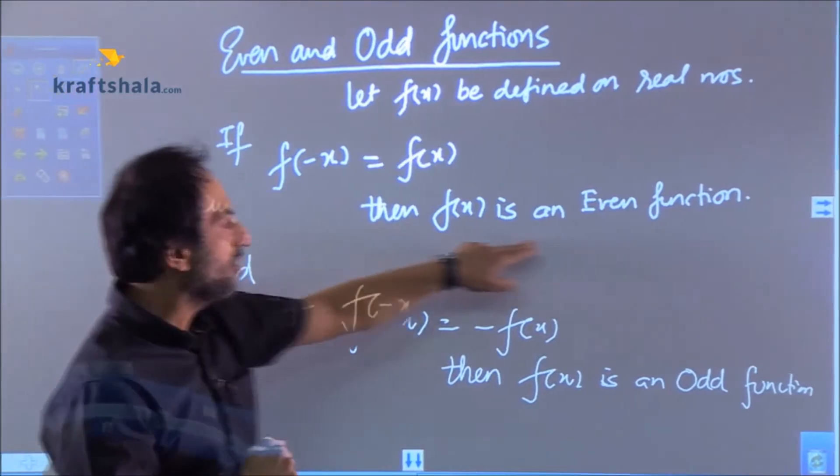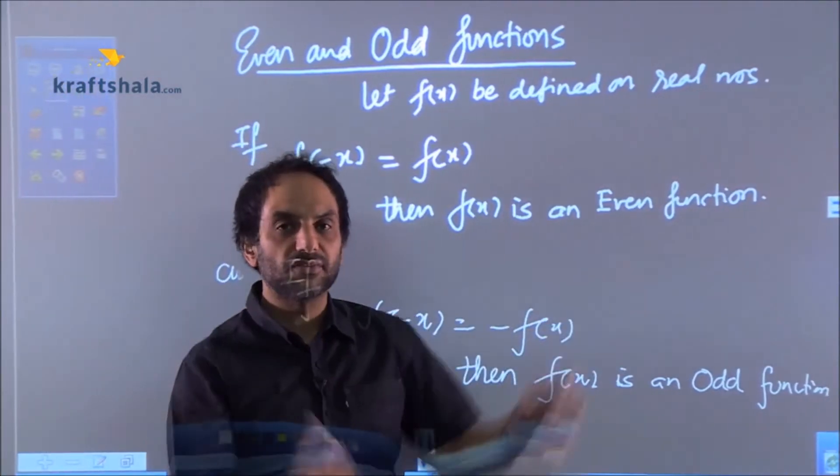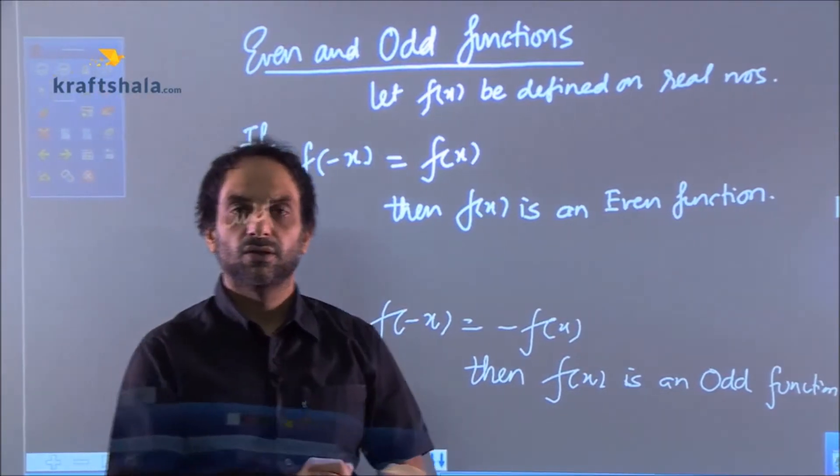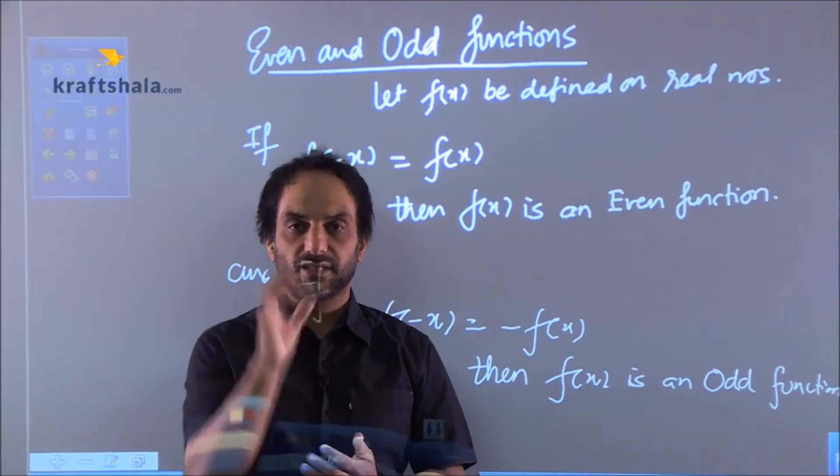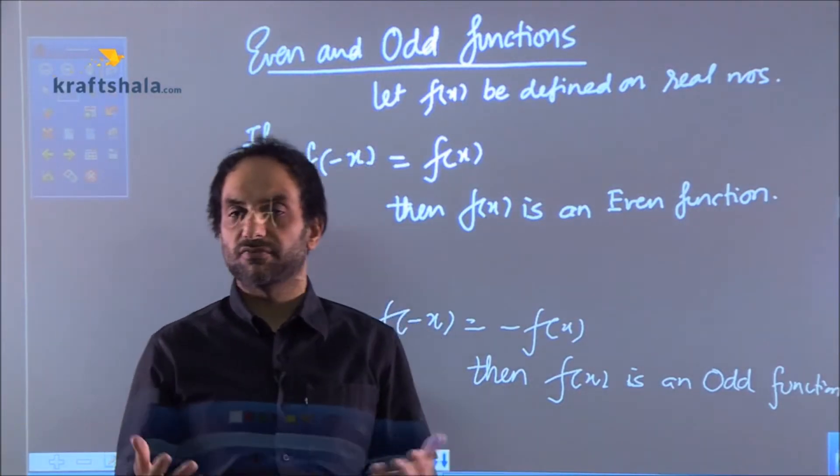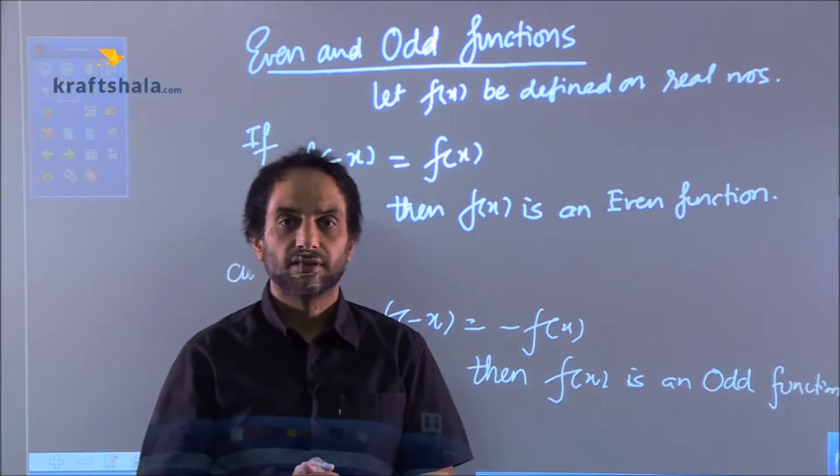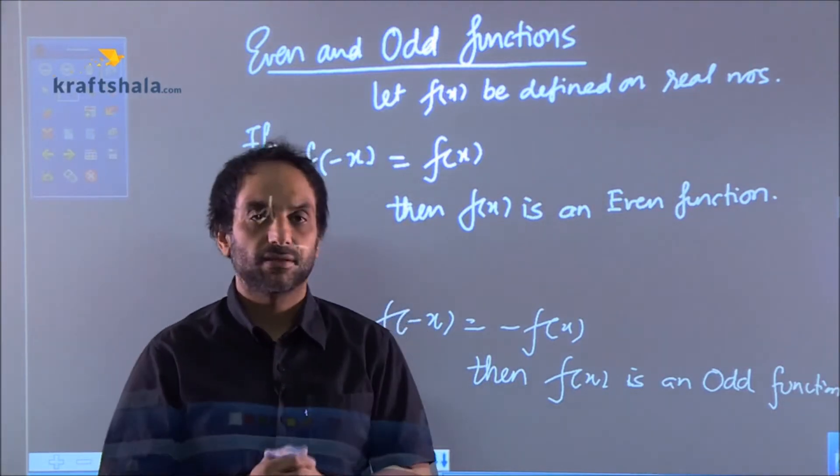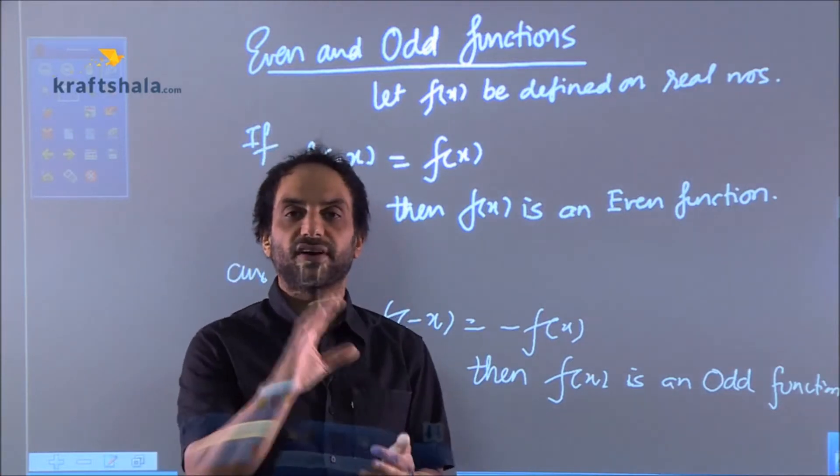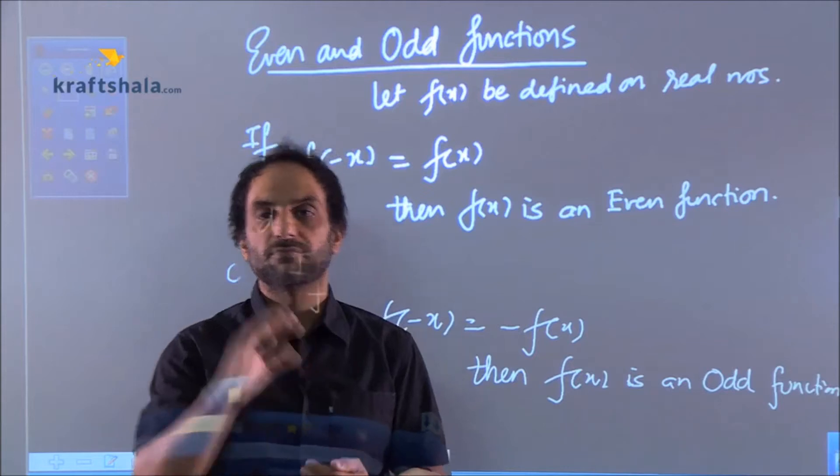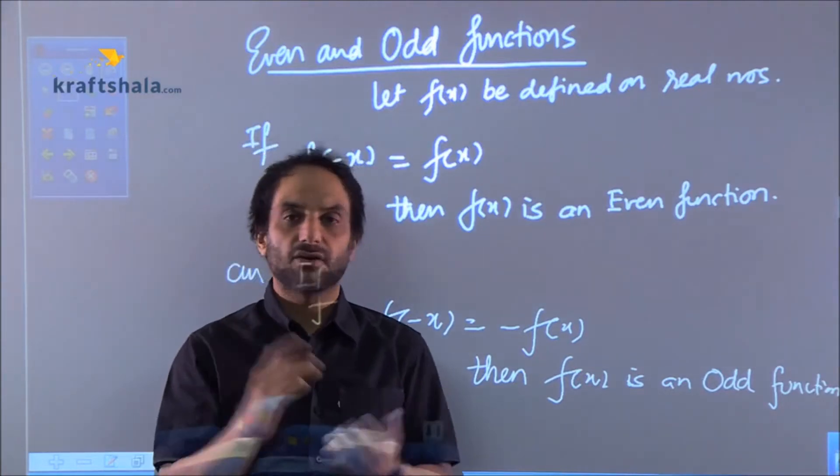For example, I take cos x. What is cos of minus x? In place of x, if I put minus x, what happens with cos of minus x? That is cos of minus theta, and what is cos of minus theta? Cos theta. So obviously, if f(x) is cos of x, then f of minus x will be cos of minus x, which is again cos of x.